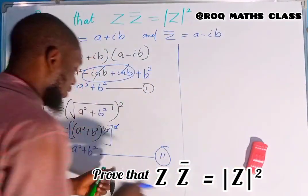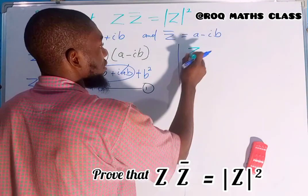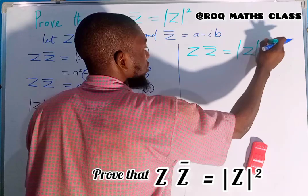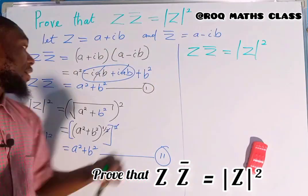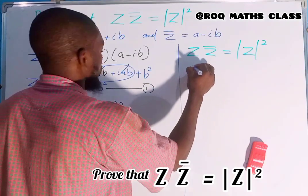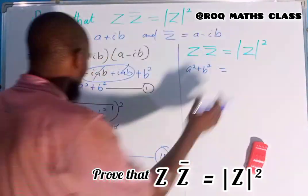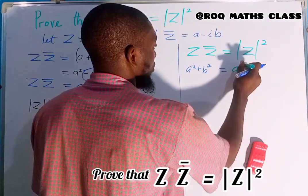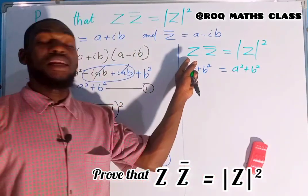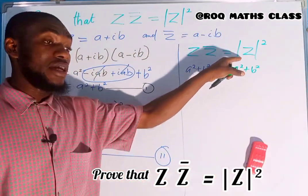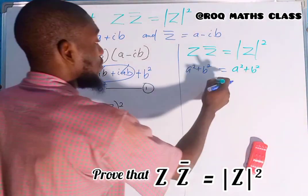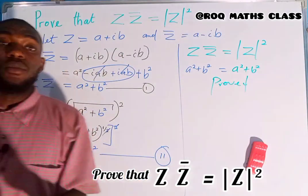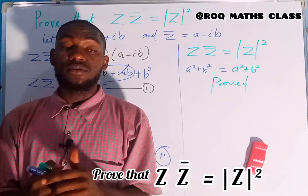Now I can conclude that Z multiplied by Z bar equals the modulus of Z squared, because Z multiplied by Z bar equals a² + b², while the modulus of Z squared also equals a² + b². Since the left-hand side equals the right-hand side, the question has been proved. Please subscribe to our YouTube channel for more math videos. Assalamu alaikum warahmatullahi wa ta'ala.